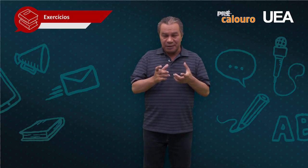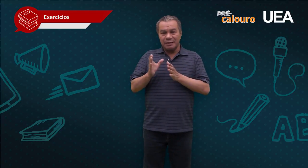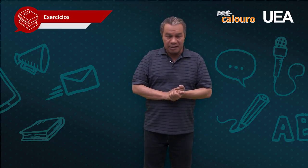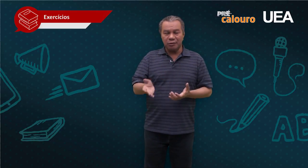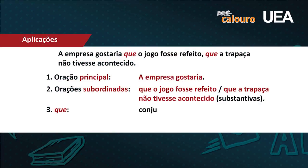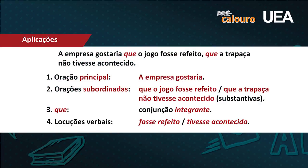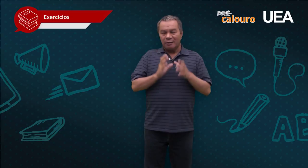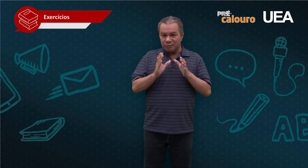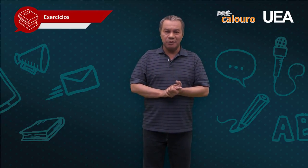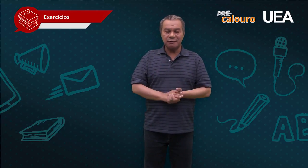Quando o 'que' aparece depois de um verbo, o nome dele é conjunção integrante, e as orações são automaticamente substantivas. No item 3, destaquei o 'que' para você: é uma conjunção integrante. E duas locuções verbais: 'fosse refeito' com verbo auxiliar e verbo principal, e 'tivesse acontecido' também com verbo auxiliar e verbo principal. Se você seguir nesse ritmo, aprendendo todos esses detalhes, o sucesso espera por você.